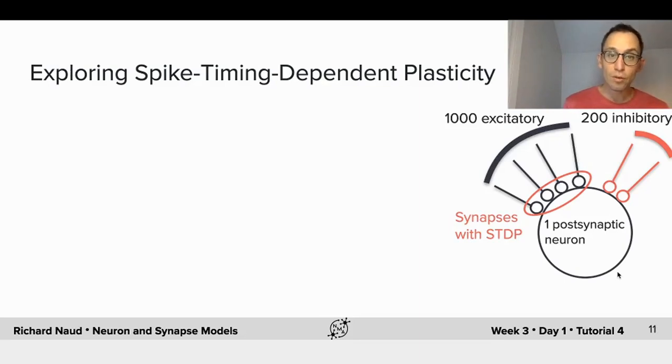Now let's explore what this sort of spike-timing dependent plasticity does. Imagine a thousand excitatory neurons firing random spikes at a fixed presynaptic firing rate, and 200 inhibitory neurons that are also firing at a fixed presynaptic firing rate. Only the synapses of the excitatory neurons are plastic, are allowed to change. And the post-synaptic neuron will fire in response to all this activity.